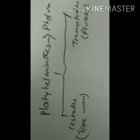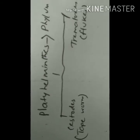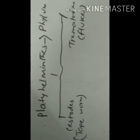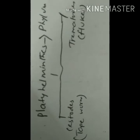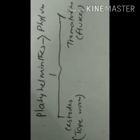Our main discussion today will be on the Platyhelminthes. This phylum is divided into two important classes: one is the Cestoda and another one is the Trematoda. The Cestodes are also called tapeworms — their body is tape-like and segmented, with multiple segments that unite to form a long tapeworm.